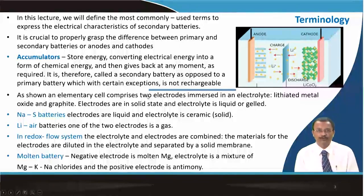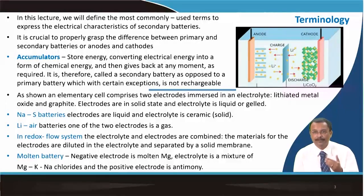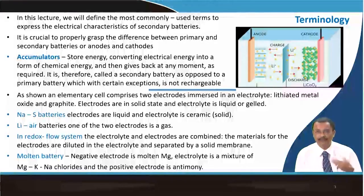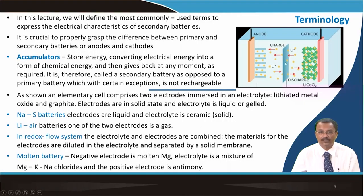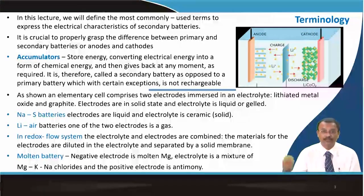A secondary battery, as opposed to a primary battery, is rechargeable in most instances. The elementary cell comprises two electrodes that are immersed in an electrolyte. Lithiated metal oxide and graphite are two very common electrodes in solid state, while the electrolyte is either liquid or in a gel state. For example, in a sodium-sulphur battery, the electrodes are liquid and the electrolyte is a solid ceramic.